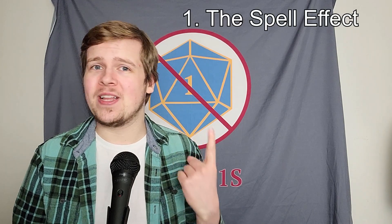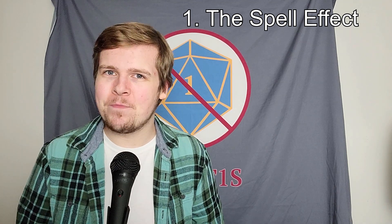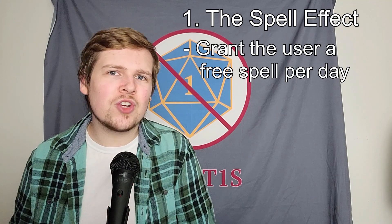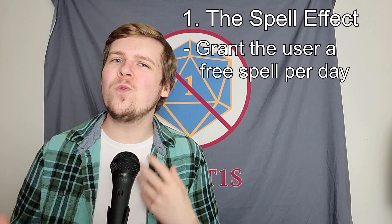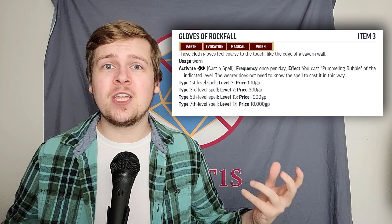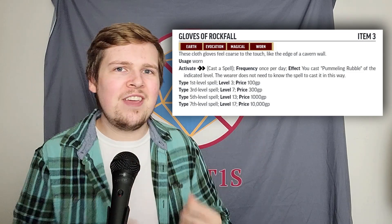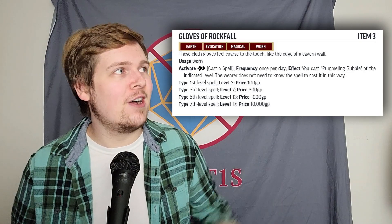When it comes to building magic items, I have three distinct strategies I tend to use: the spell effect, the general boost, and the unique effect. The spell effect is definitely the simplest and easiest to use and is almost always my go-to. This usually boils down to granting the user of the item a free use of that spell. In one of my patron campaigns, I've given one of my players the Gloves of Rockfall — this just lets them cast Pummeling Rubble at first level once per day, simple as that. It can grant a caster an extra spell slot per day specifically for that spell, or even give a martial character access to a little bit of magic every day. It's a super simple magic item with a plethora of good uses.